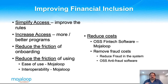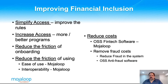We also want to reduce the friction of using Mojo Loop — the ease of use — and improve interoperability, making the switch work with other switches much more easily. More importantly, how do we reduce the cost? We reduce costs with open source software. Open source can't solve every problem — there are times where some commercial off-the-shelf solutions need to be done — but the open source cost structure certainly can drive down the overall cost of the solution.